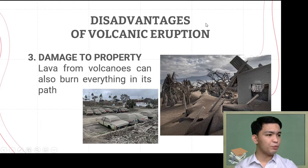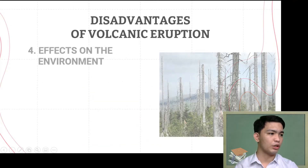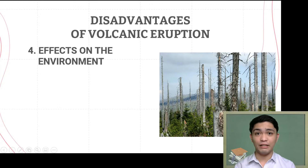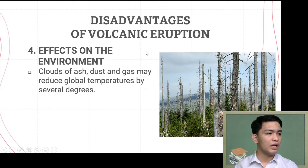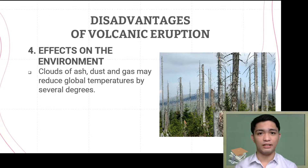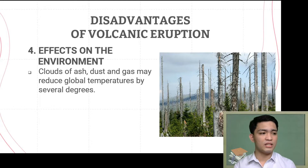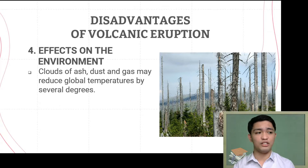The fourth disadvantage is adverse effects on the environment. Clouds of ash, dust, and gas may reduce global temperatures by several degrees. Because of the emission of ash and dust, they cover the Earth's surface, blocking sunlight and resulting in a decrease in global average temperature. Along with ash and dust, volcanoes also emit harmful gases that add to the greenhouse gases in our atmosphere.